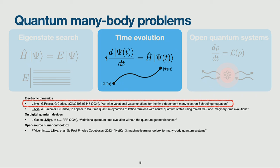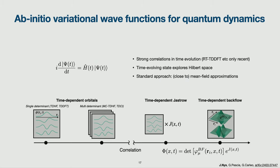The second project is on doing time evolution, again focusing on ab-initio electronic systems. For ground states, searches are often manageable because correlations are not too complex and there's a lot of locality. But once you start time-evolving things, correlations start building up and become longer range. Simple approximations — like tensor networks — become quite difficult once you start doing time evolution.